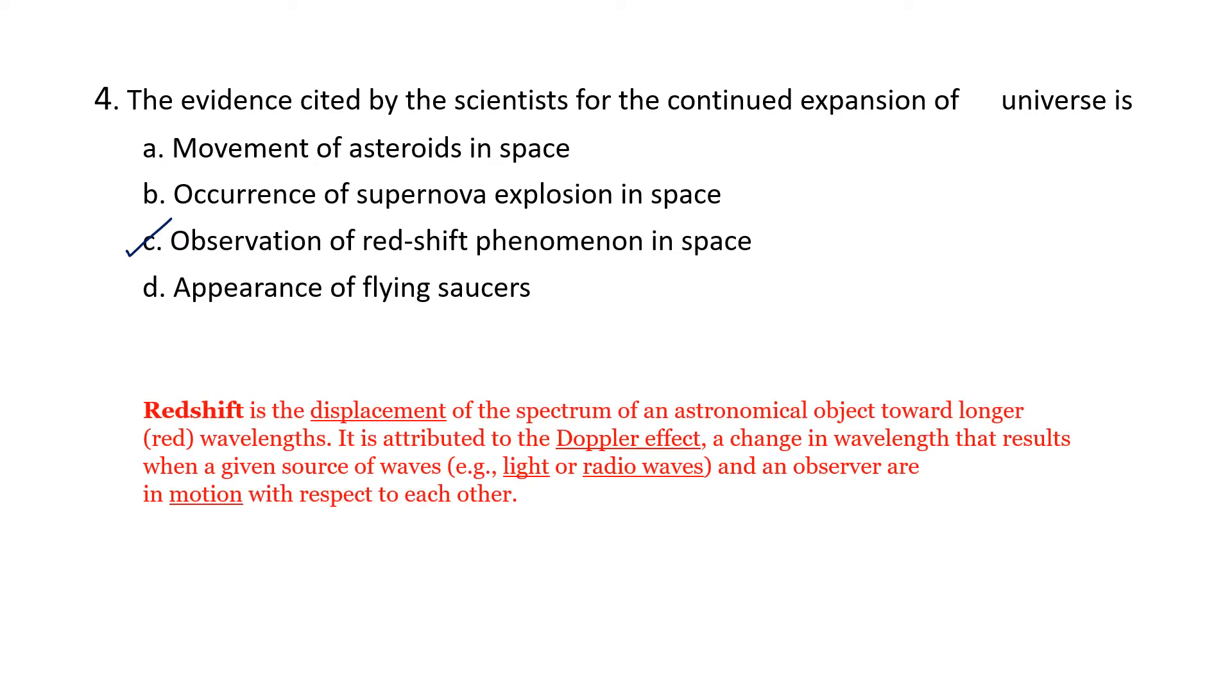What is redshift phenomena? Redshift is the displacement of the spectrum of an astronomical object towards longer or red wavelength. This is similar to Doppler's effect when you study sound. Doppler's effect is a change in wavelength that results when a given source of waves, light or radio waves, and an observer are in motion with respect to each other.